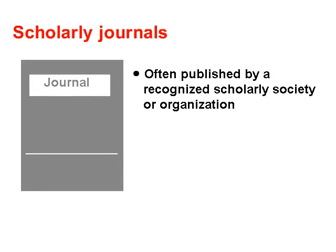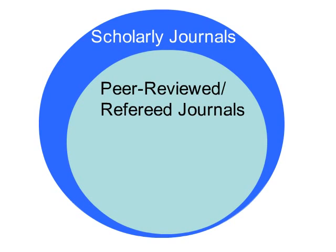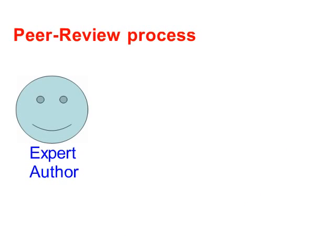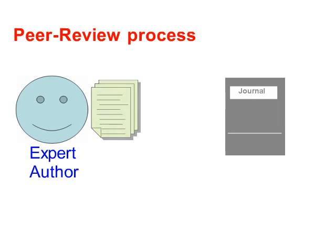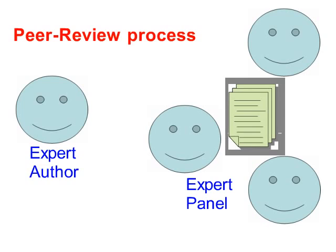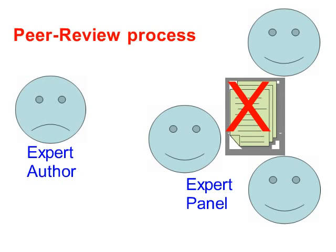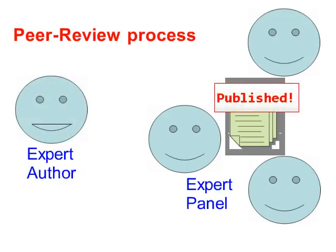Scholarly journals are often published by a recognized scholarly society or organization. Most, but not all, scholarly journals are peer-reviewed. Peer-reviewed journals are also known as refereed journals. Peer-review is an editorial process by which books or articles written by experts are reviewed by a panel of peers or other experts in the same subject area. The expert panel may decide to reject the article or send it back to the author for revisions until it's finally ready to be published.